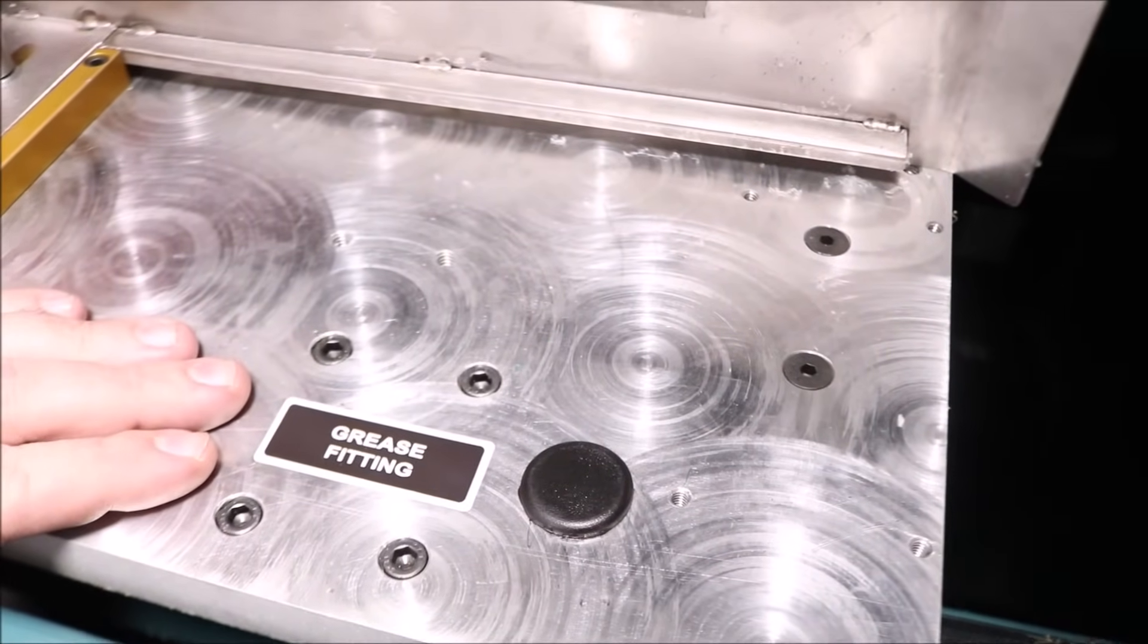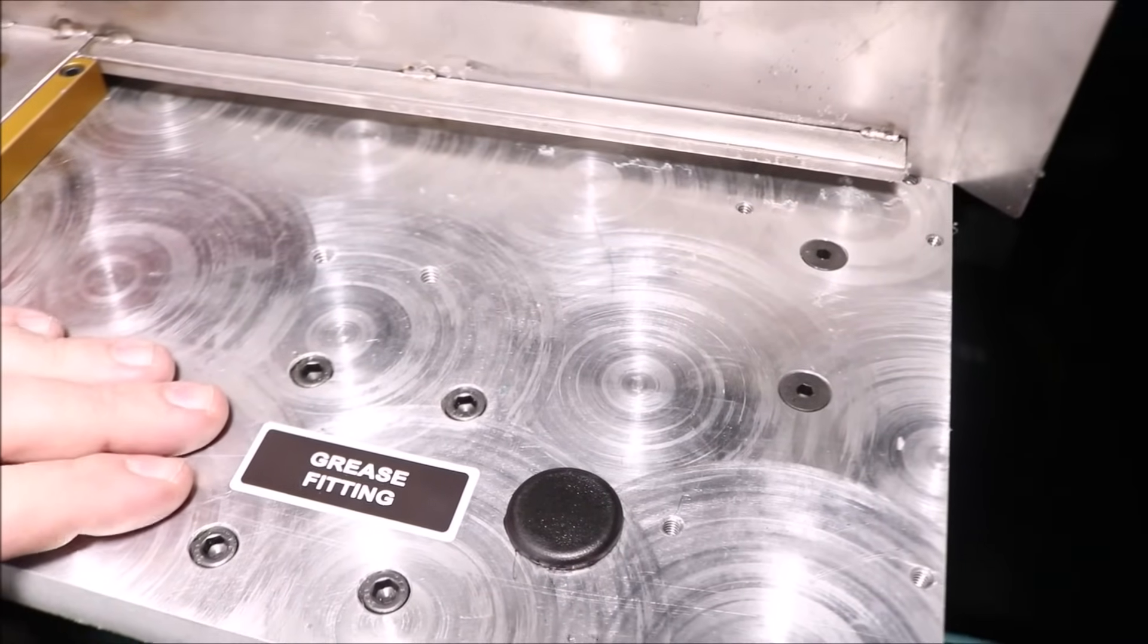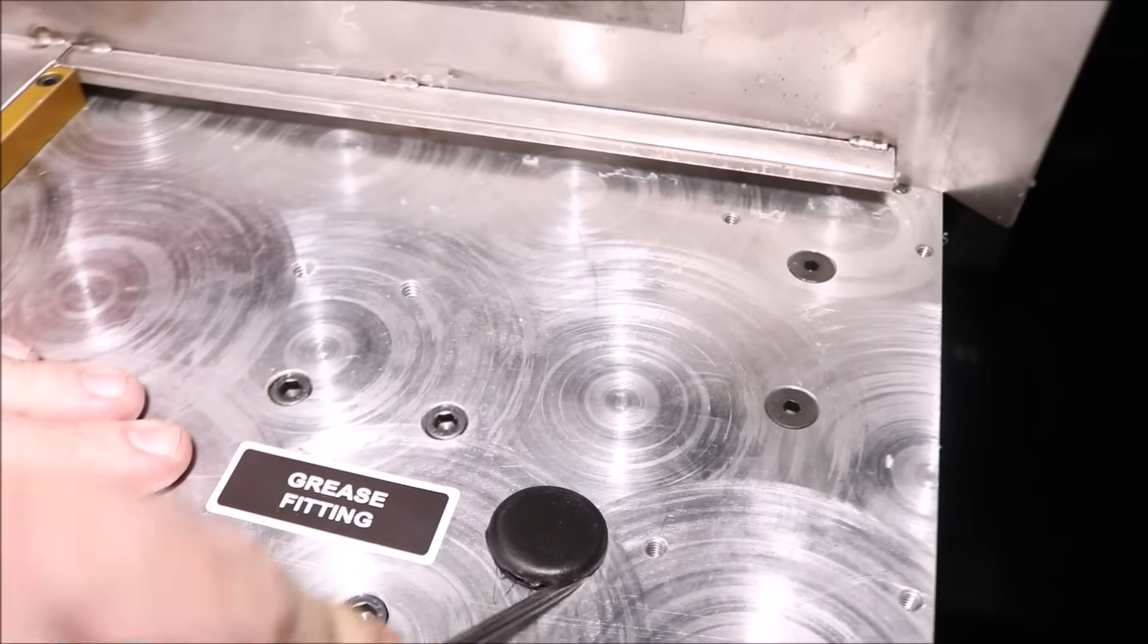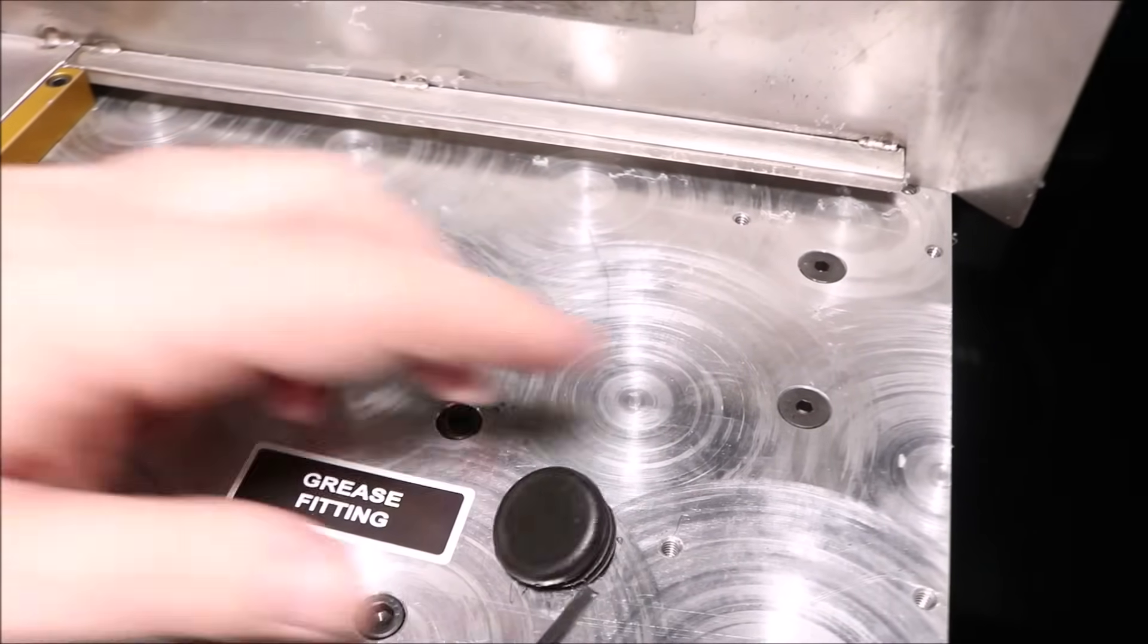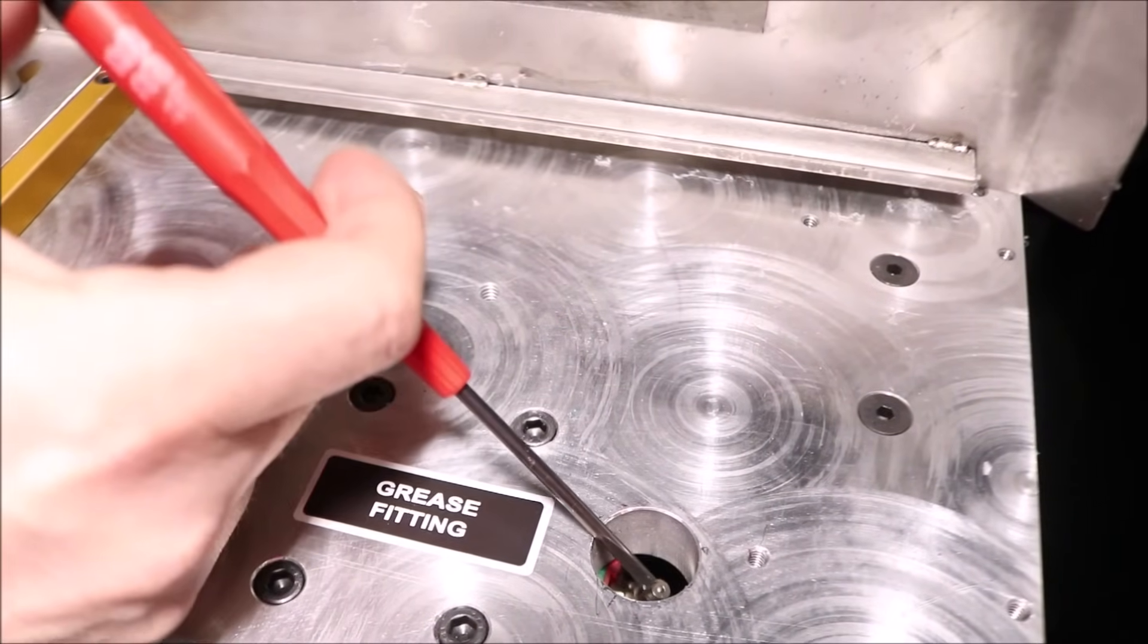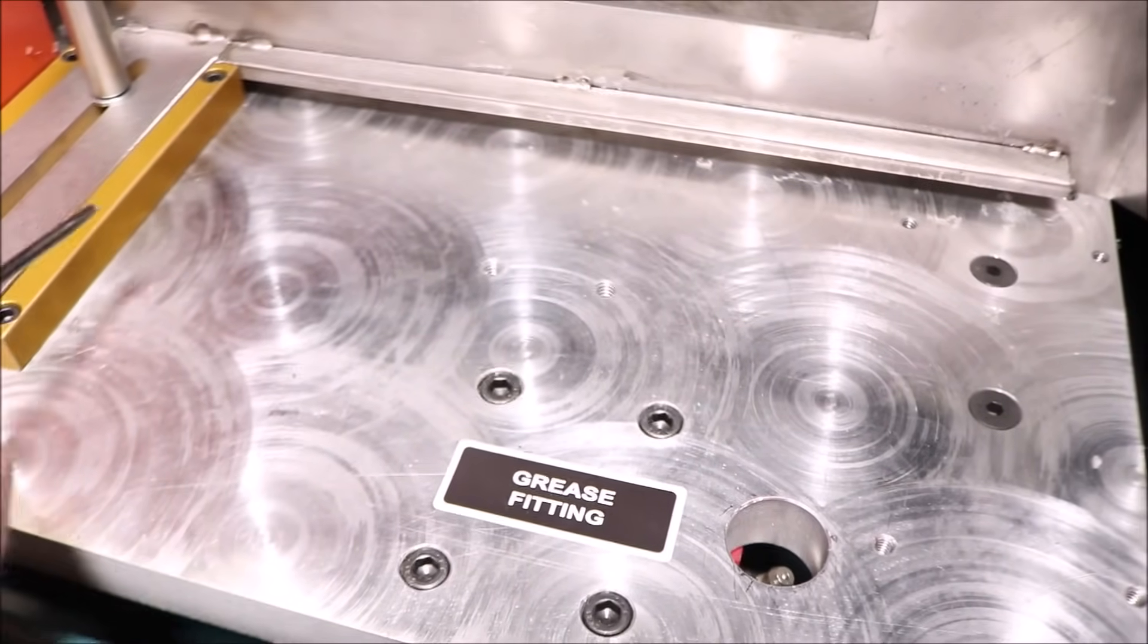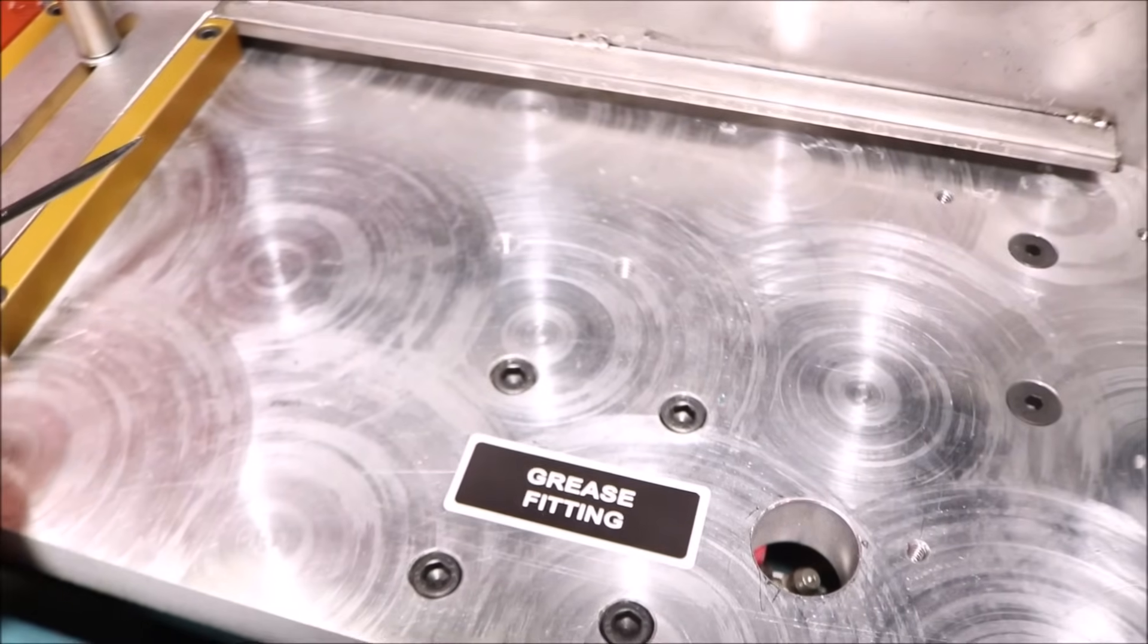Greasing the rail bearings should be done at least once a month. In order to do that, we will expose the grease nipple by removing this cap. With the cap removed, at this point we have access to the grease nipple. You just need to do one squeeze of grease in all four grease nipples of the overall four rail bearings.